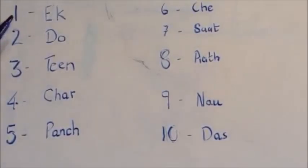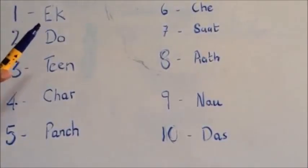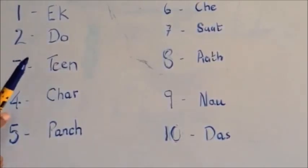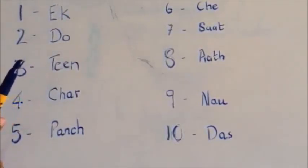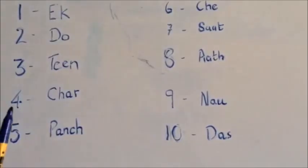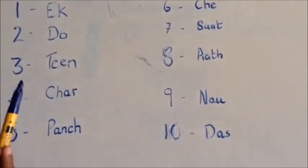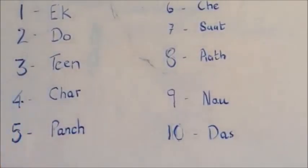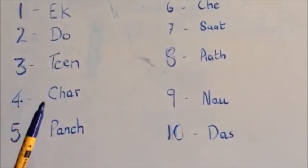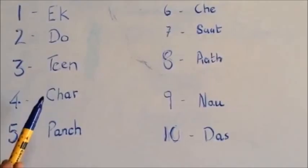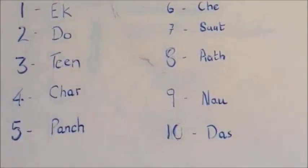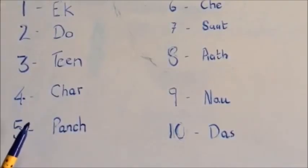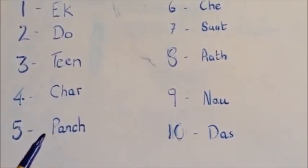Now I'm going to teach you numbers. For one it's 'ek', for two it's 'do', for three it's 'teen', for four it's 'char' — C-H-A-R — and for five it's 'panch' — P-A-N-C-H, the N is silent.